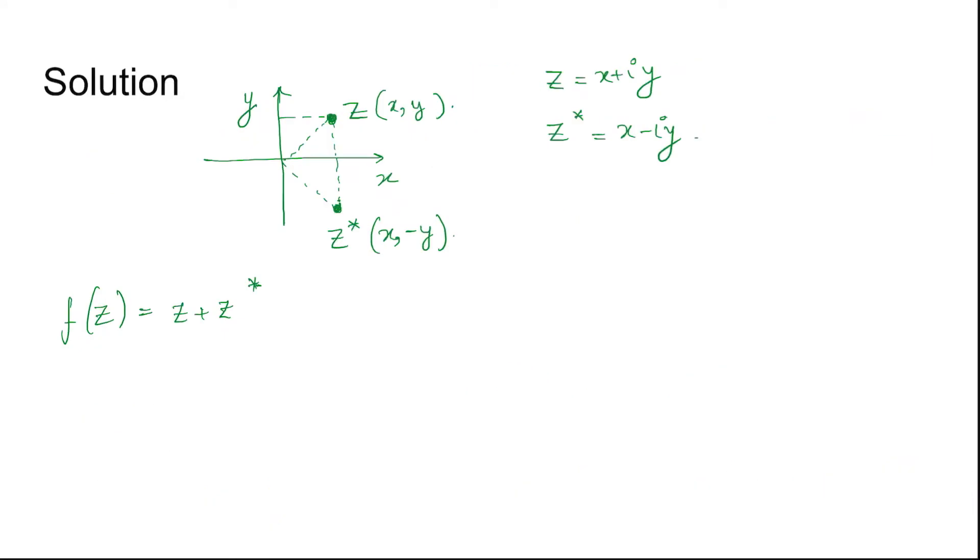Coming to the solution: if z is x plus iy, then it will exist in the complex plane somewhere in this quadrant, like x comma y is z. So z conjugate is nothing but the x-axis reflection of this complex number z. So z star is x comma minus y.